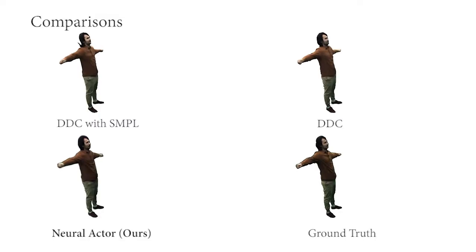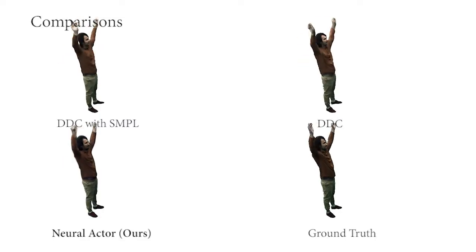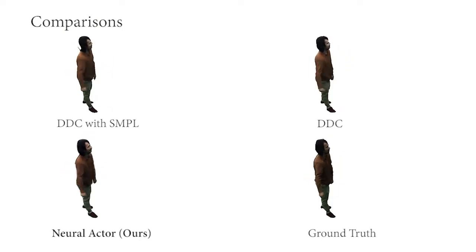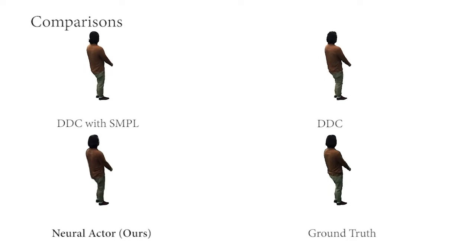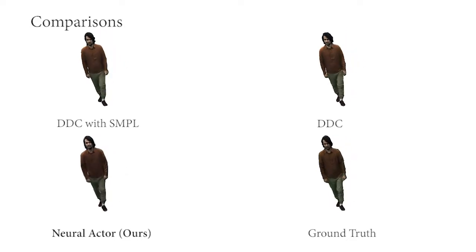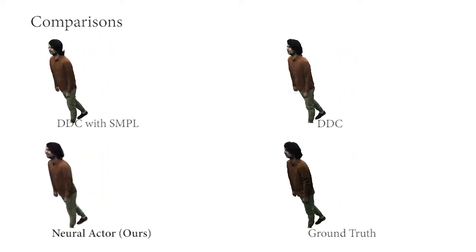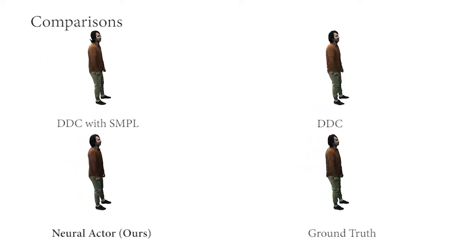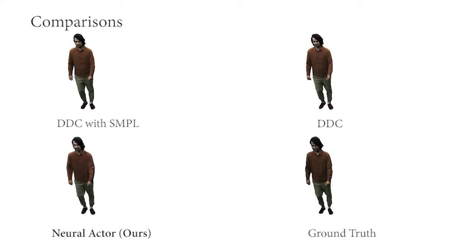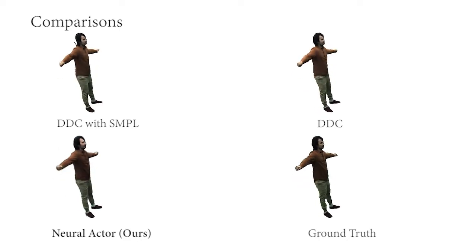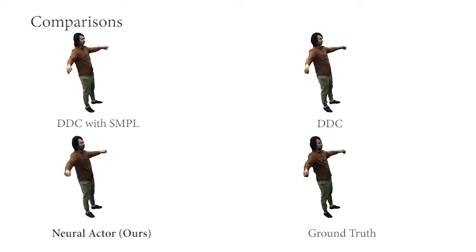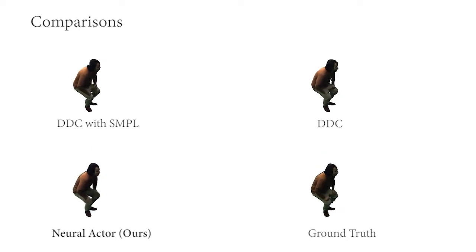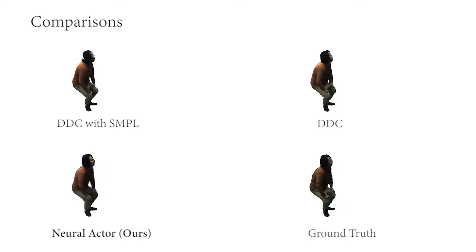We further compare with a recent mesh-based method, real-time deep dynamic characters, or DDC for short. More specifically, we compare to the original work which requires a person-specific template, and a variant of it where we replace the template with the SMPL model. While DDC works well with its person-specific template, it cannot trivially work with the SMPL model since the initial template geometry is too different from the geometry of the real actor, resulting in geometric artifacts.